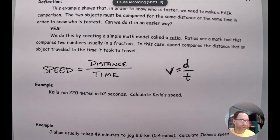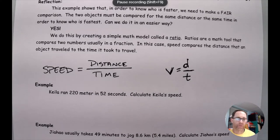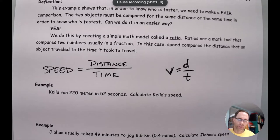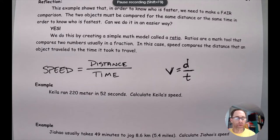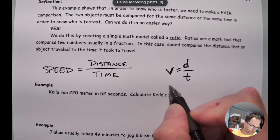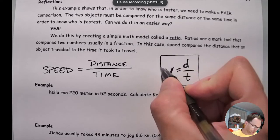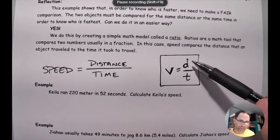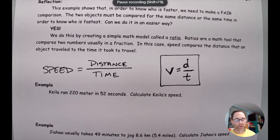We write this as V equals D divided by T. D for distance makes sense, T for time makes sense, but V for speed — the reason we use V is because V also represents velocity, and velocity is our goal. Speed is a stepping stone to a more sophisticated way of thinking. Rather than have two different symbols for concepts that are very similar — different ways of measuring how fast something is — we use the same symbol. This equation calculates the ratio of distance to time to make a fair comparison of who is fastest.